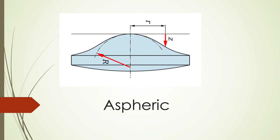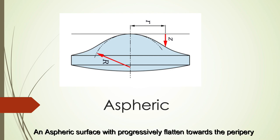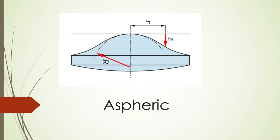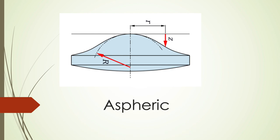In an aspheric lens, the curvature gradually and progressively flattens towards the periphery. Such a surface which is steeper in the center and flatter in the periphery is known as a prolate surface. Most normal corneas have a prolate surface, as opposed to an oblate surface which is flatter in the center and steeper in the periphery, as occurs in a post-LASIK cornea. The surface that resembles a donut is called a torus.